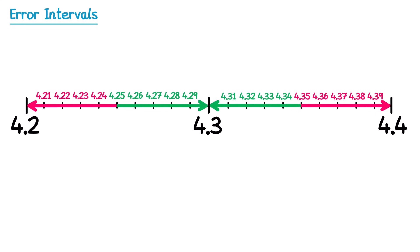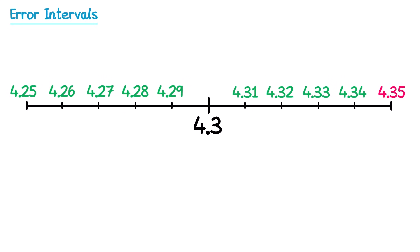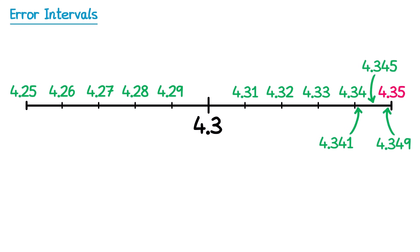Let's have a closer look at this section of the number line. At the moment it looks like the largest possible number would be 4.34. But what if we zoomed in and went a little bit past 4.34? So 4.341 would still round down to 4.3. And 4.345, halfway in between that interval, is okay as well, and so is 4.349. In fact, we could take any number we want as long as we go up to 4.35, but don't actually pick 4.35.